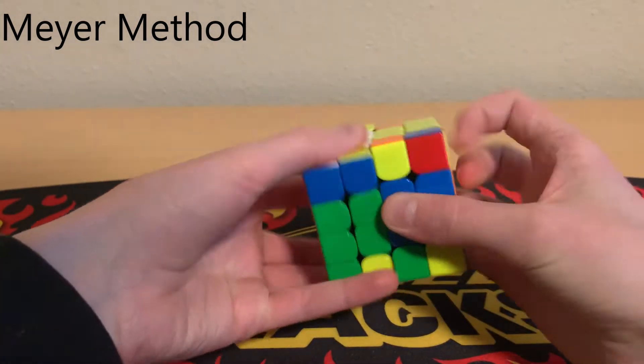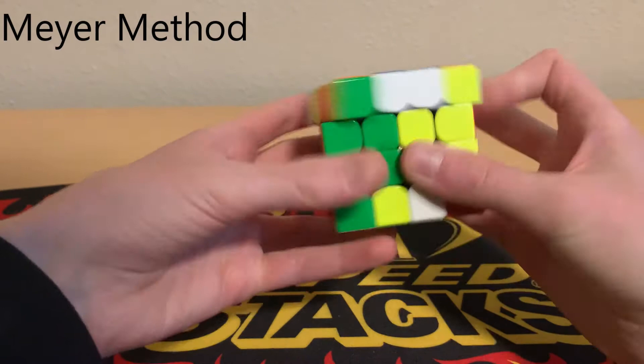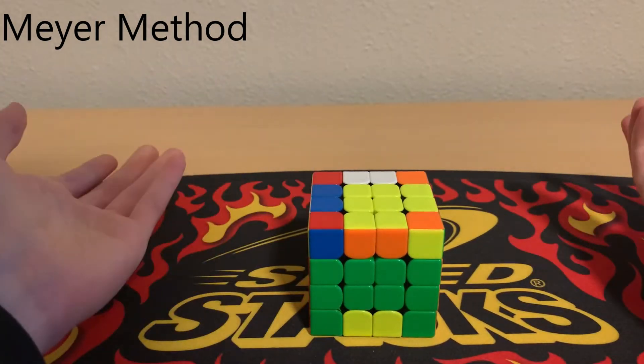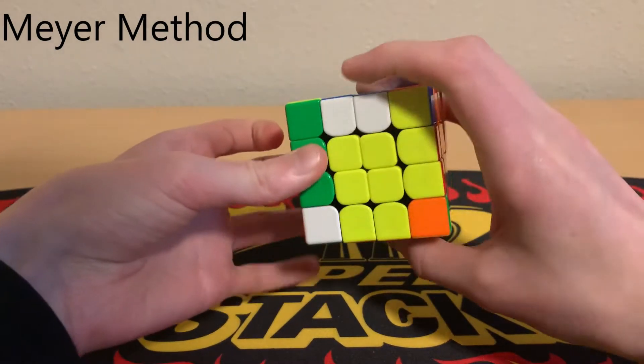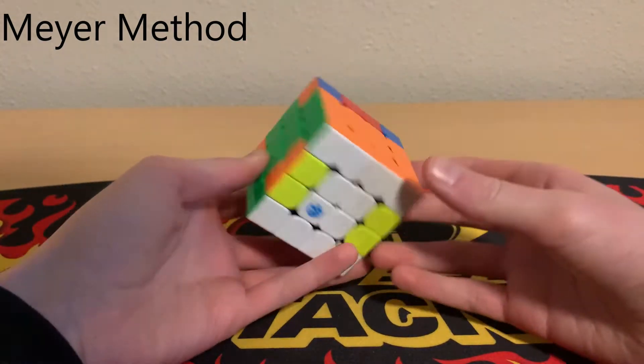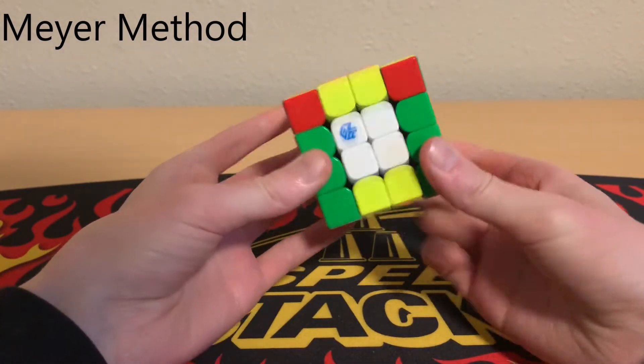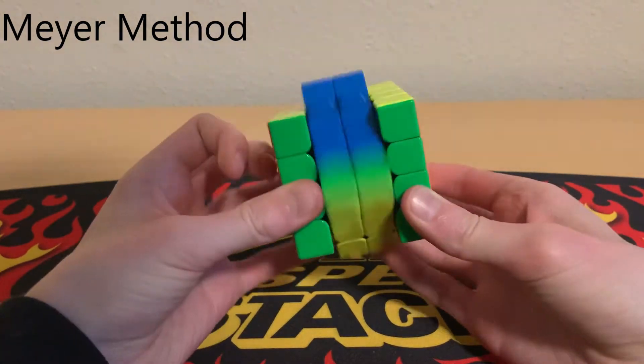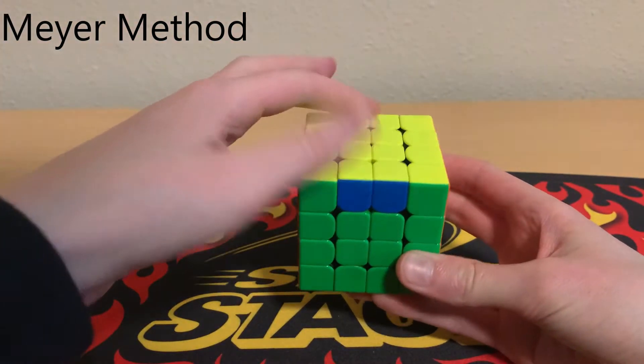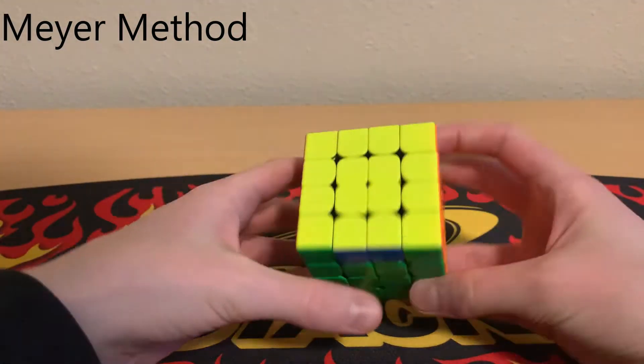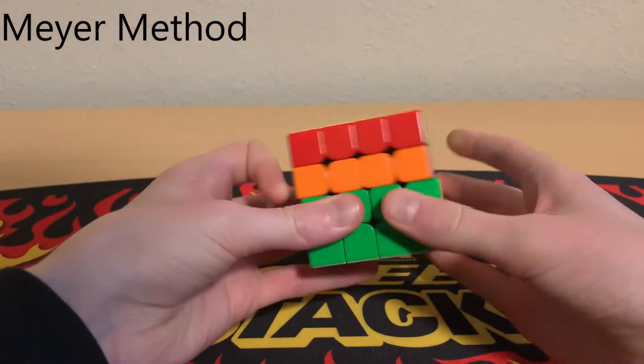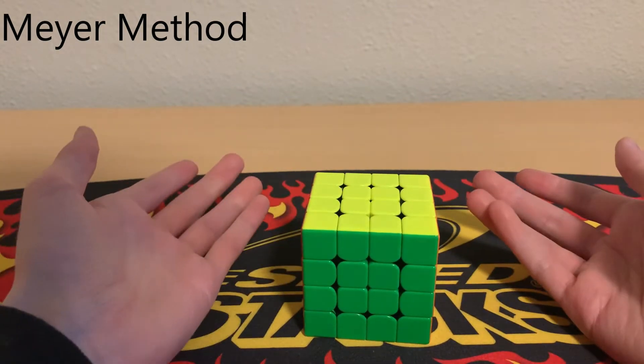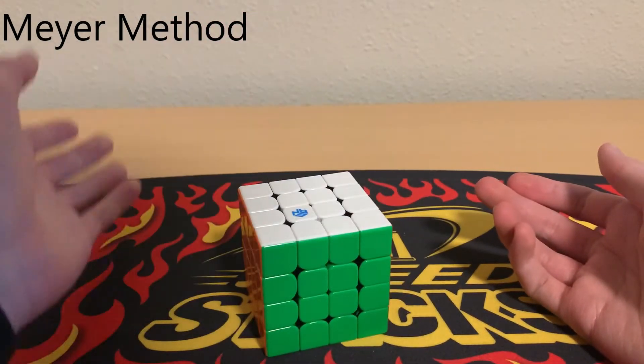Parity is this really horrible, really long algorithm. But once you're done with that, you have an even number and you can just do your CMLL like normal and try to do your LSE as best you can, but you may also run into LSE parity. There's another algorithm for that. So that's the Meyer Method on 4x4.